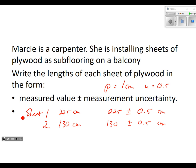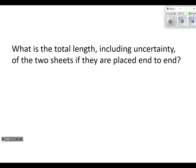What is the total length including uncertainty of the two sheets if they are placed end to end? The two numbers were 225 and 130. So I'm going to rewrite them: 225 ± 0.5 and 130 ± 0.5. I would suggest write them on top of one another and then you just add them. That's going to be 355 centimeters plus or minus how much? 1.0. You probably should put the 1.0 to indicate that it came from a decimal.